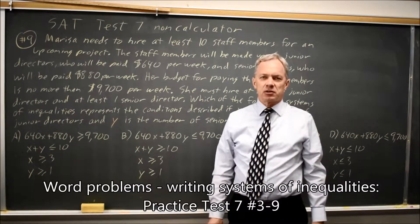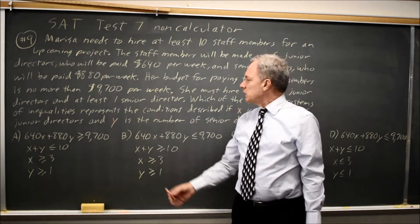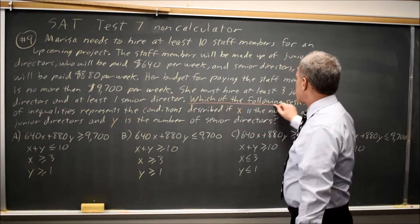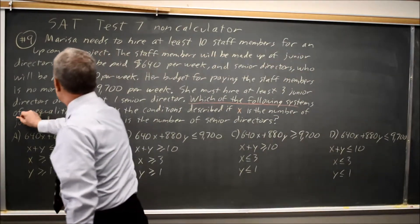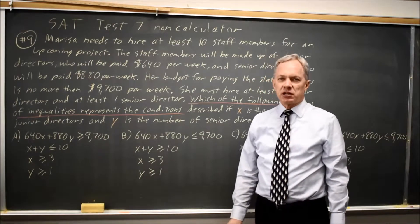This is SAT Test 7, non-calculator question number 9. College Board provides us with a long word problem, which ends with, which of the following systems of inequalities represents the conditions?